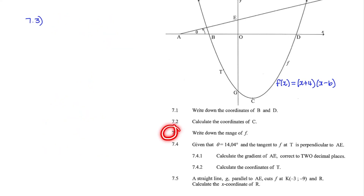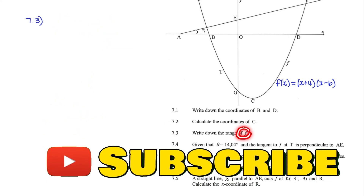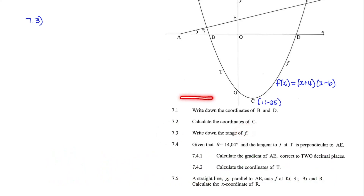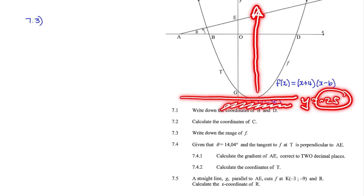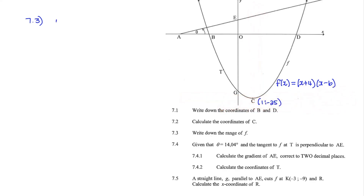Question 7.3: Write down the range of f. The turning point of this function is at C, which is at (1, negative 25). The y-value at the turning point is negative 25, and below this the graph does not exist. So the range is all y values above or equal to negative 25. Therefore the range is y greater than or equal to negative 25.